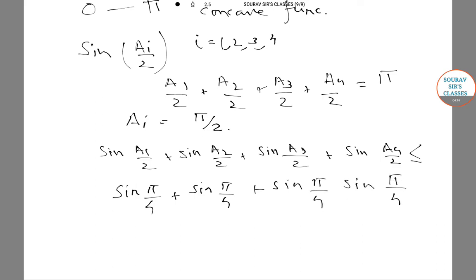Since each of them will achieve maximum value if ai equals pi by 2, this will achieve maximum value if each ai takes the value pi by 2. Hence, sin a1 by 2 plus sin a2 by 2 plus sin a3 by 2 plus sin a4 by 2 is less than or equals to 4 sin pi by 4.